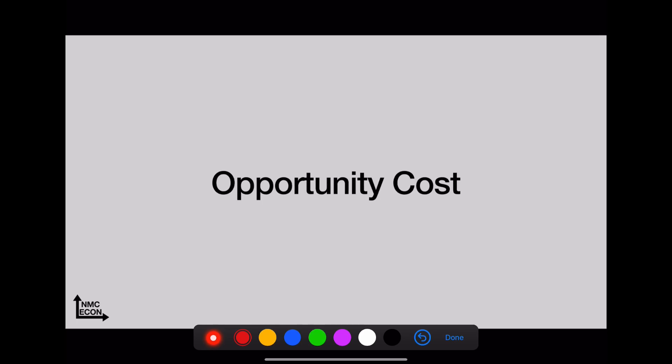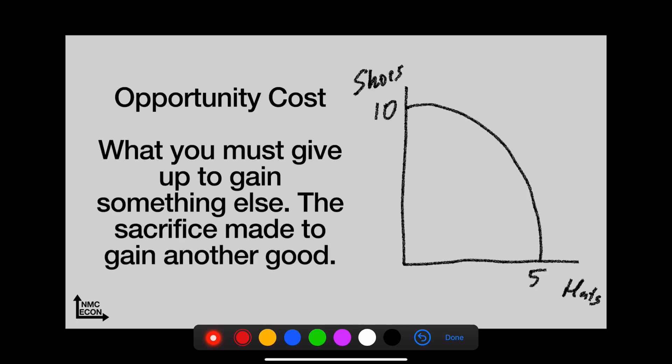Opportunity cost—really important word in econ. This is what you must give up in order to gain something else. For this example, it's what you sacrifice in order to gain another good. Take a look: this country or business can make either 10 shoes or 5 hats. That means if they make one hat, they gave up two shoes. That's just the unit rate. So what's their opportunity cost of a hat? Two shoes.